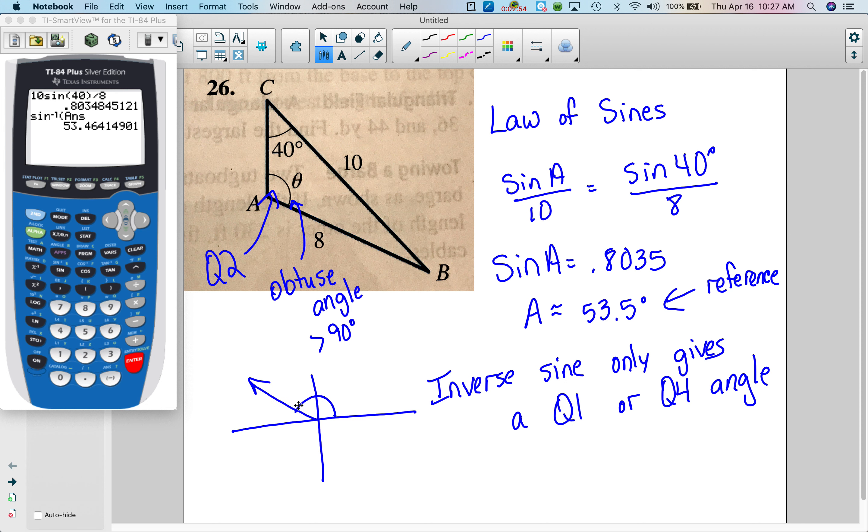So that means I need the angle, I'm just drawing here. If the reference angle is 53.5, so that means I have to do 180 minus 53.5, and when I do that I get 126.5 degrees, and this is theta.